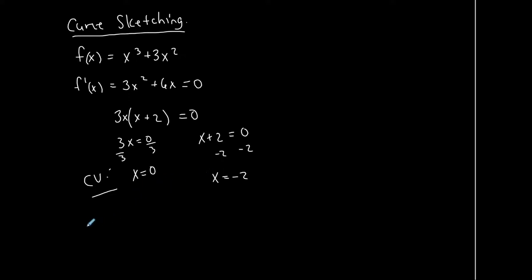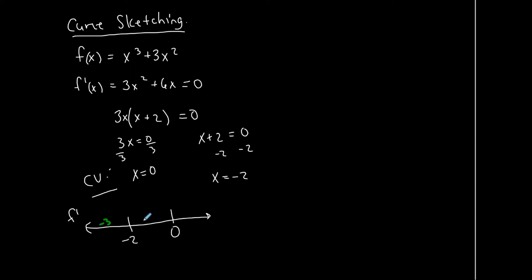Once I find the critical values, I stick them on an f′ number line from least to greatest. This is all part of the first derivative test. For the interval to the left of −2, I need a test number — let's pick −3. Between −2 and 0, let's pick −1. And greater than 0, pick 1.